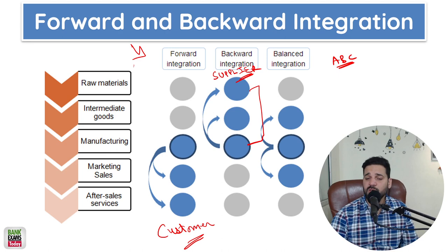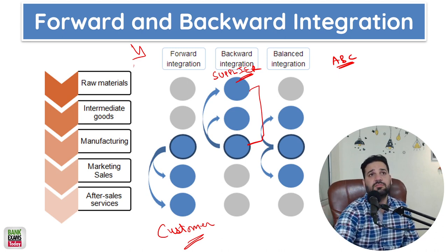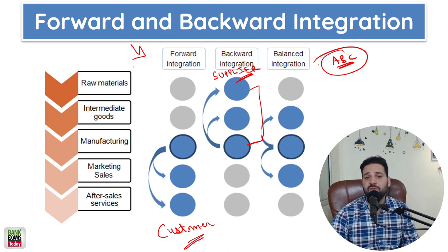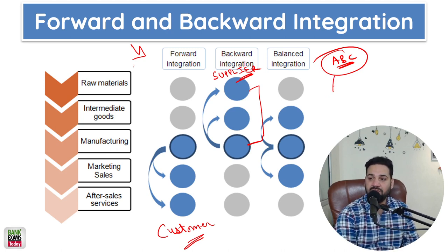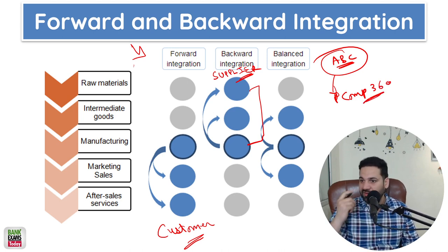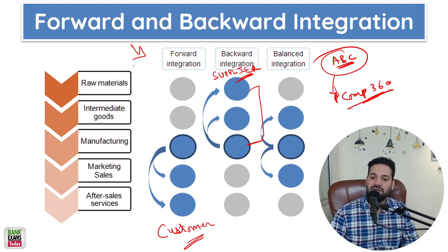What is forward integration? It means moving towards the customers. Let's take an example: a coaching institute ABC is giving their advertisement on a newspaper called Competition 360, which is a major source of revenue for them. So ABC institute actually acquired Competition 360 — that is forward integration. If they are moving towards suppliers to grow, that is backward integration; if the merger or acquisition is towards the customers, that is forward integration.